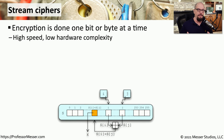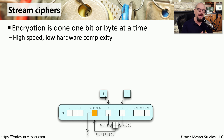When you want to encrypt some information, there are a number of different techniques you can use to take something that is plain text and turn it into ciphertext. One way is to perform a stream cipher, and the other one is to use a block cipher.